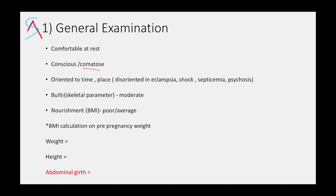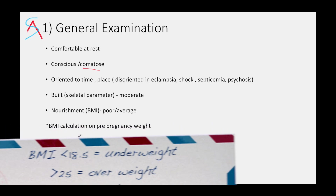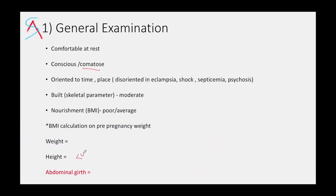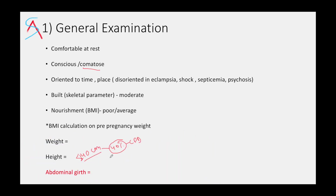Then you talk about the build of the patient, which is a skeletal parameter, and talk about nourishment. Nourishment basically depends on BMI. Always remember to calculate BMI based on the patient's pre-pregnancy weight. If the height is less than 140 cm, only 40% of those patients will have CPD. The cause of height less than 140 cm could be some abnormality in the pituitary or Turner syndrome.